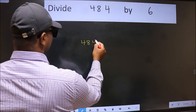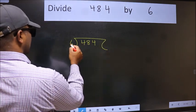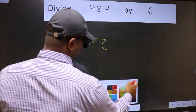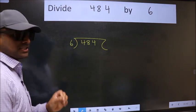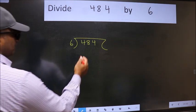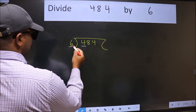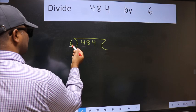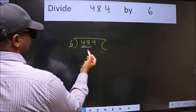484 and 6 here. This is your step 1. Next. Here we have 4 and here 6. 4 is smaller than 6. So take two numbers, 48.